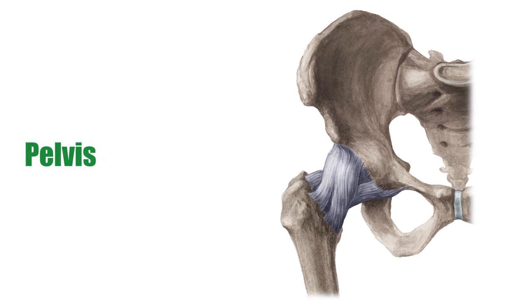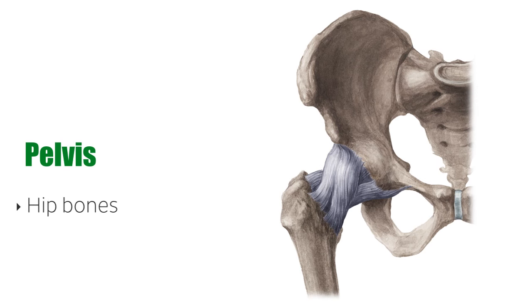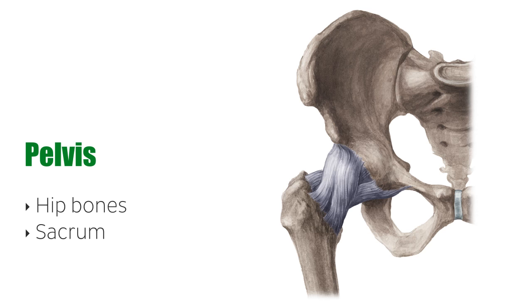The pelvis is formed by four bones which include a pair of hip bones, otherwise known as innominate bones, the sacrum, and the coccyx.